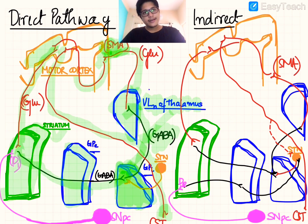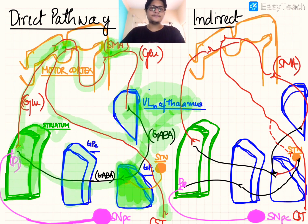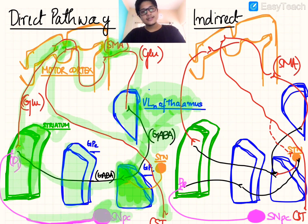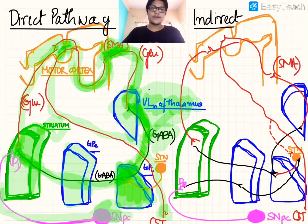When the ventrolateral nucleus of thalamus is disinhibited, it sends glutamatergic efferents to the supplementary motor area, which further sends glutamatergic efferents to the primary motor cortex, and this circuit continues. Additionally, the substantia nigra pars compacta sends dopaminergic outflow that excites the striatum via D1 receptors, following the same pathway: inhibition of GPI, disinhibition of VLN, excitation of SMA, and then the primary motor cortex. This encompasses the direct pathway.